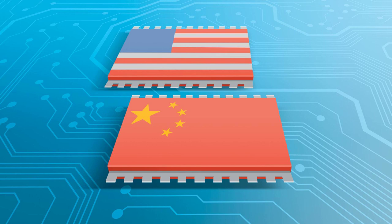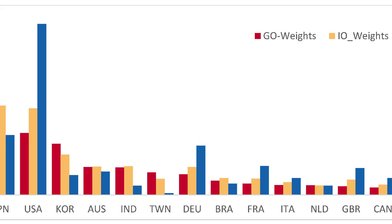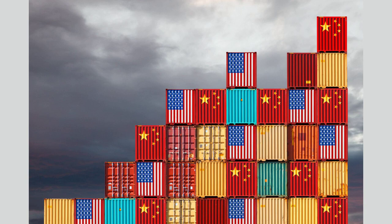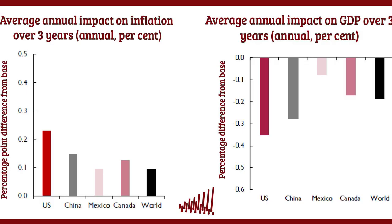Welcome back to the final segment of our video on the history of the US-Japan trade war. In the previous segments, we explored the origins of the trade war, its height, and the key events that occurred during this period. In this segment, we will delve into the aftermath of the trade war and the lessons that can be learned from this economic conflict. The US-Japan trade war had a lasting impact on both countries and the global economy. While the trade war officially ended in the mid-1990s, its effects continued to be felt for years to come.